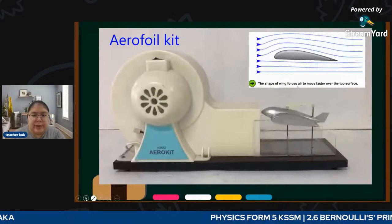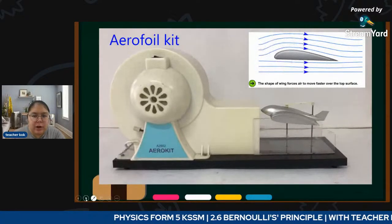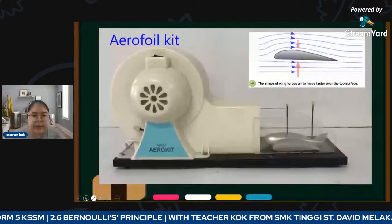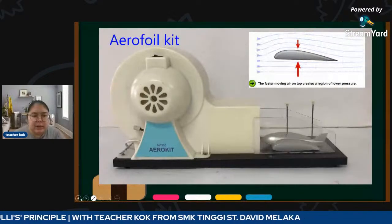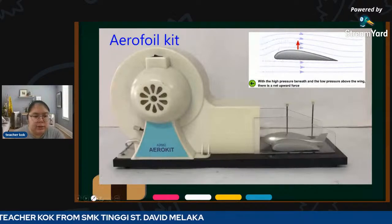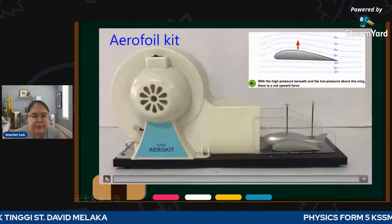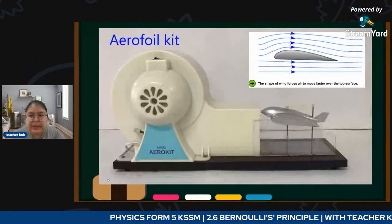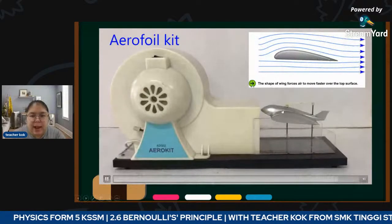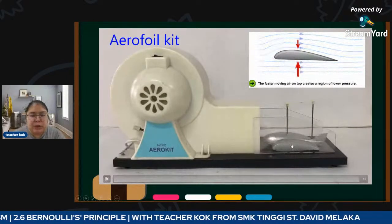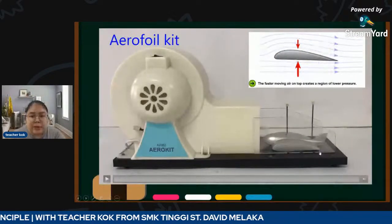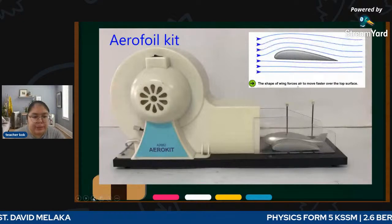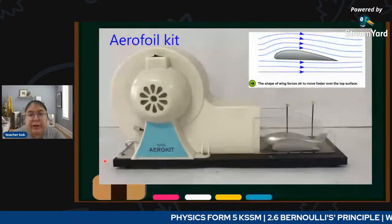You can see it lift up, and when I turn it off it goes down. At the top the speed is high, creates low pressure; at the bottom we have high pressure which pushes the aerofoil up. Now let's go deeper to explain aerofoil related with Bernoulli Principle.